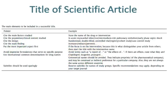Title of a scientific article. The main elements to be included in a successful title are: cite the main factors studied — for example, state the name of the drug or intervention; cite the population or clinical context studied — for example, in acute myocardial infarction, intermediate-risk pulmonary embolism, or early-phase septic shock; and cite the design.